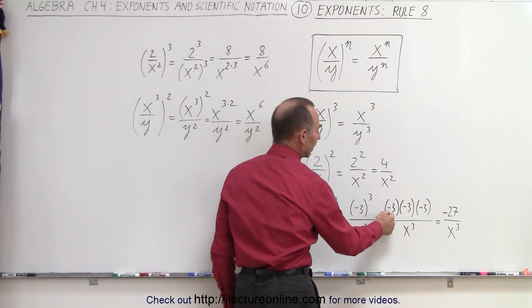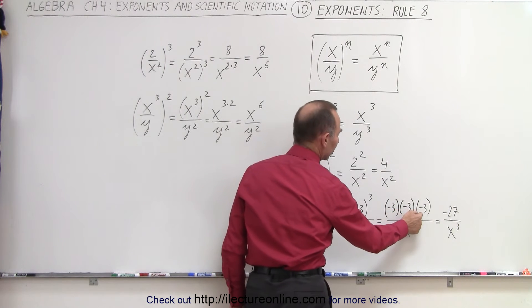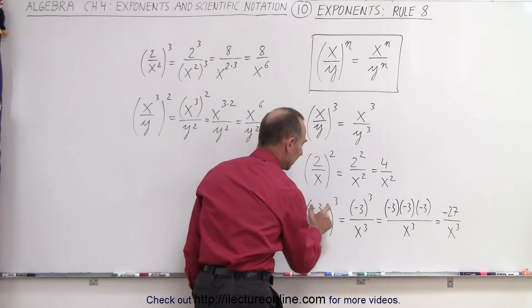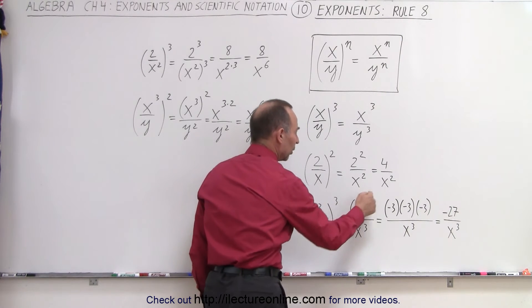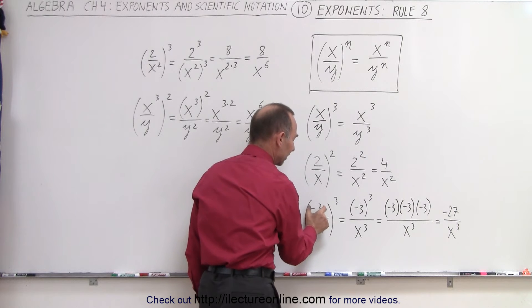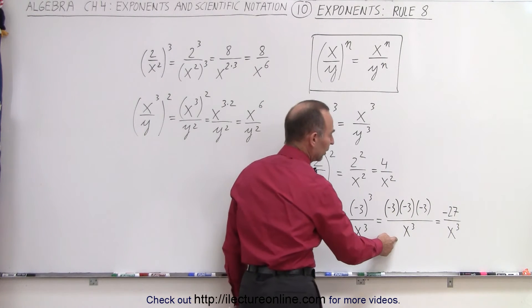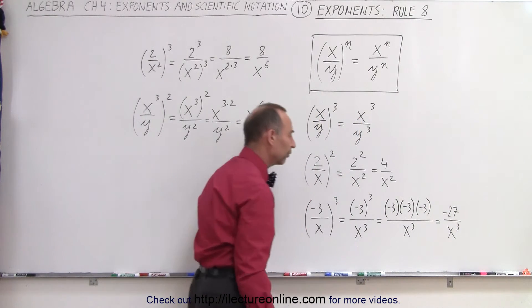And negative 3 cubed means negative 3 times negative 3 times negative 3, which is negative 27. Notice that the exponent applies to the negative sign because the negative sign is inside the parentheses. Of course, the denominator is straightforward, and so it's negative 27 over x cubed.